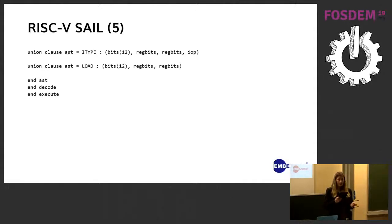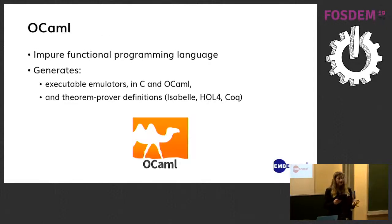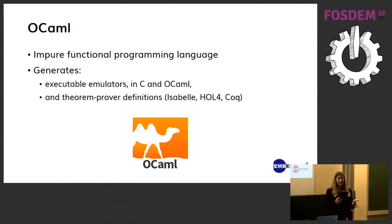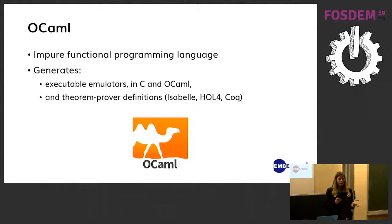The SAIL backend is written in OCaml, which is an impure functional programming language like Python. Functional languages are based on mathematical functions, as opposed to procedural languages like C which depend on flow statements such as if or for loops. The backend generates executable emulators in C and OCaml and theorem prover definitions from the SAIL model. One of the highlights of OCaml is its parametric polymorphism and type inference, which allows operations to be written independently of the type of the elements. This is useful for architectures like RISC-V that have multiple sizes of instruction, since a single operation can be used on all sizes.